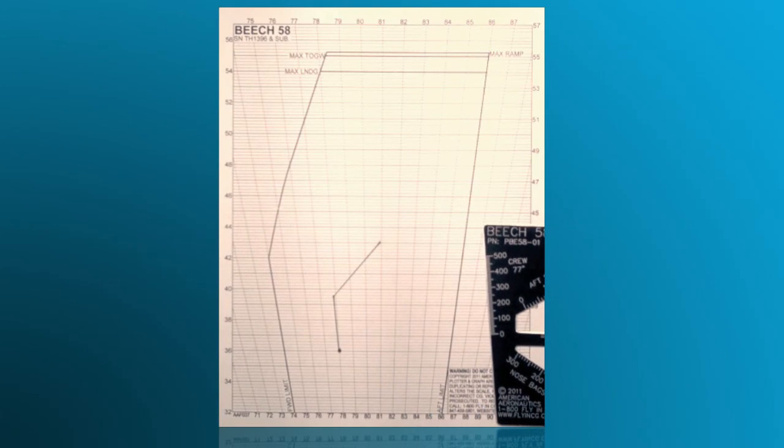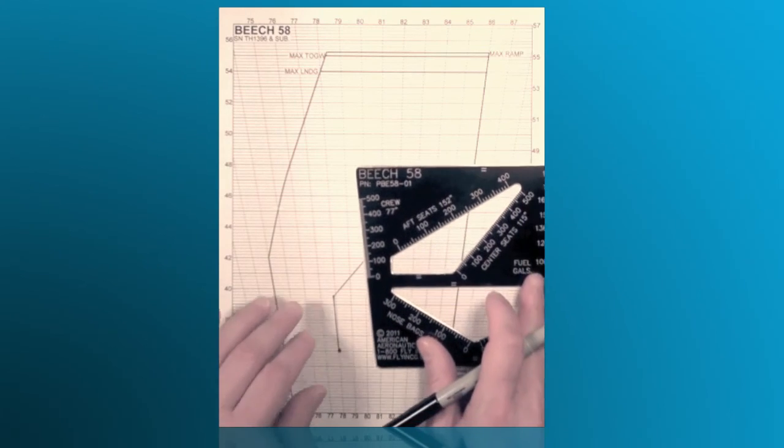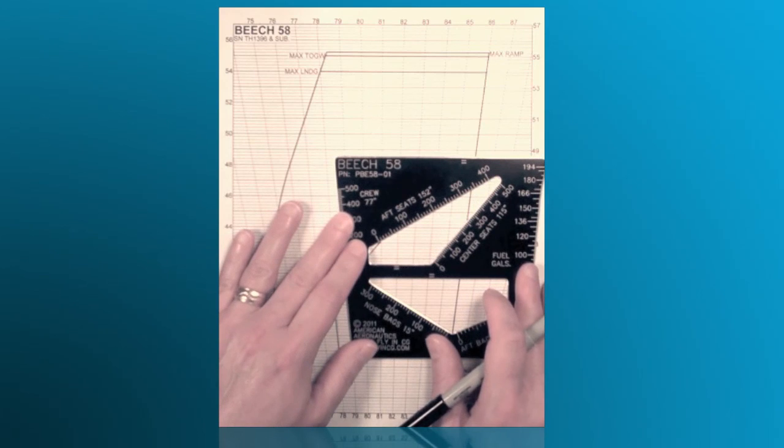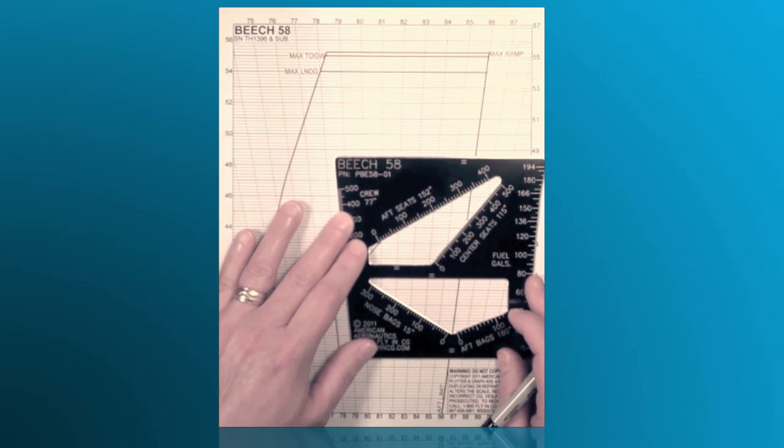Next, let's add the passengers in the last row. By using the aft row scale on the plotter, let's draw upscale to 250 pounds. Again, by placing the zero tick mark on the last point plotted and drawing upscale.